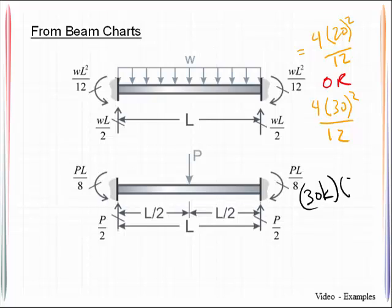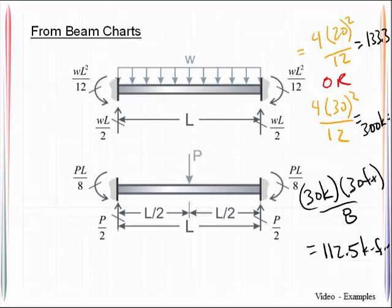And that is going to be all over 12. So let me just write that. We also have for this down here, 30 kips times 30 feet all divided by 8. So that works out to be 112.5 kip feet. This one works out to be 133.3 kip feet. This one works out to be 300 kip feet.